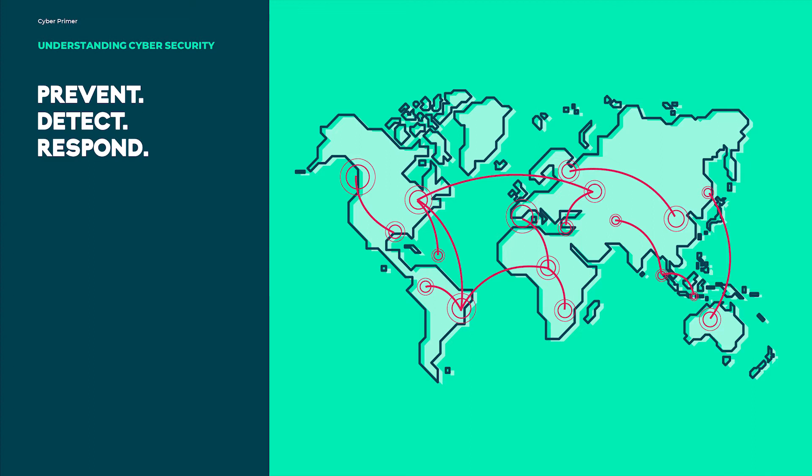Once you have understood the reality of cybersecurity, you can begin to implement measures to minimize the risk of attack. We can make an attacker's life all but impossible by preventing an attack, monitoring hosts, network segments, access requests, privilege escalation, and other metrics.